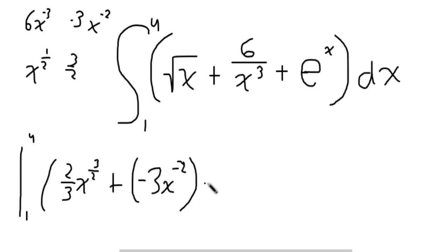And then last term, e to the x. Now, something special with e to the x is if you take the derivative or integral of e to the x, you also get e to the x. So we can just write e to the x. And that's done with this section of the problem.